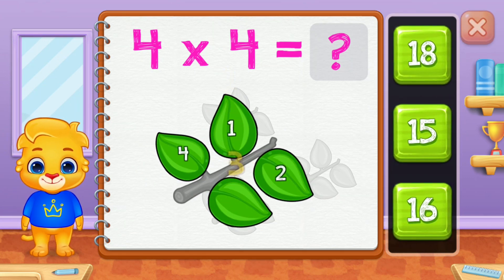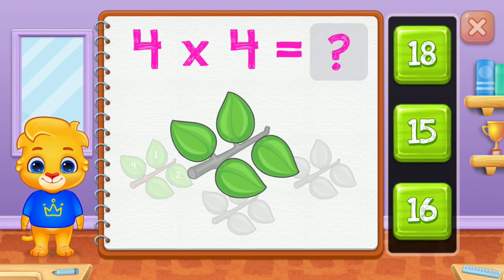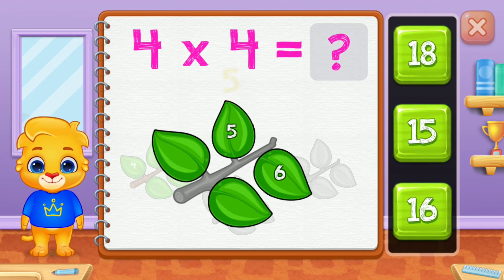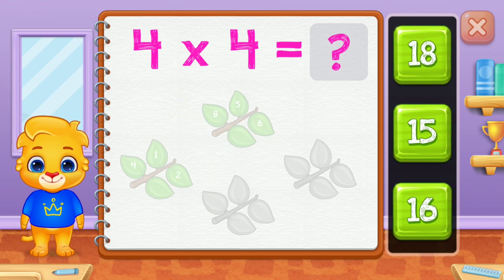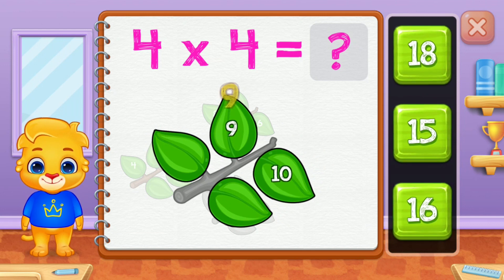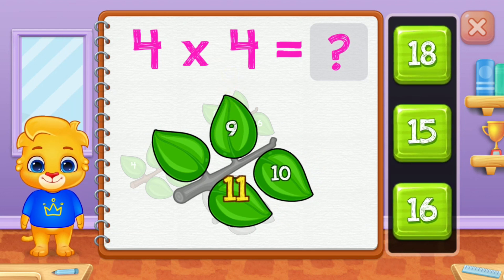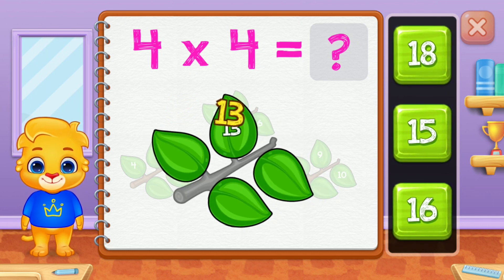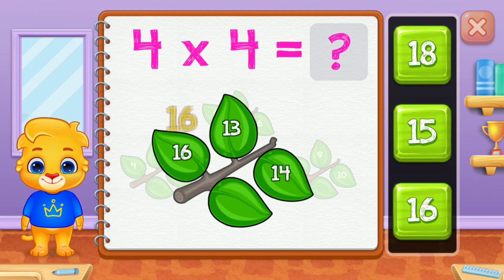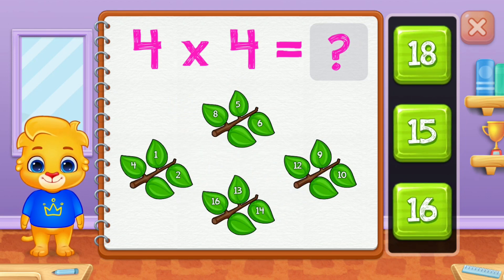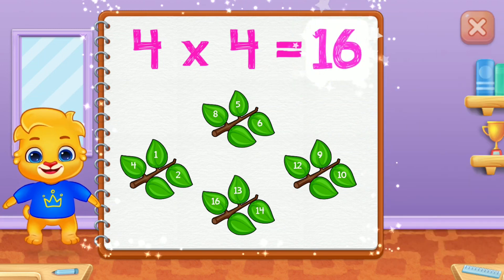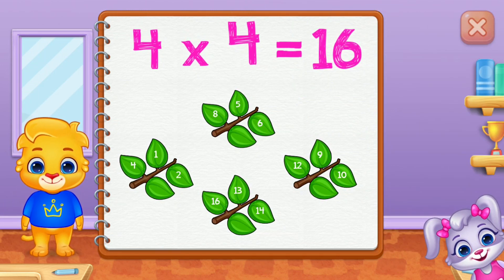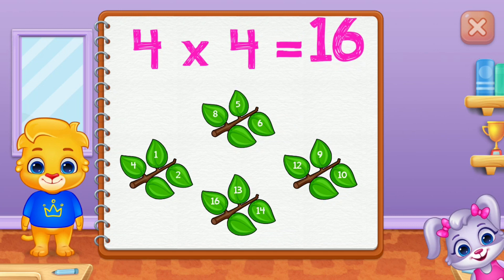Two, three, four, five, six, seven, eight, nine, ten, eleven, twelve, thirteen, fourteen, fifteen, sixteen. Four groups of four equals sixteen.